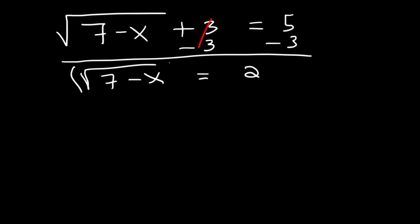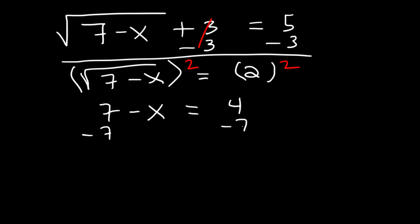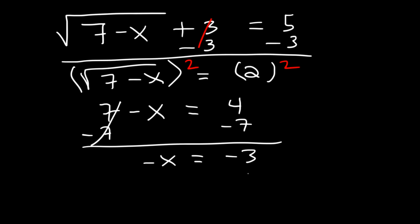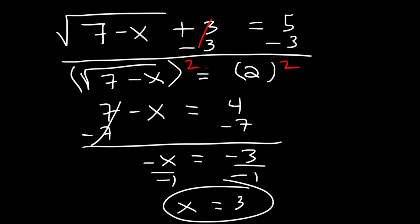Now at this point, you want to take the square of both sides. If you had done it before, you would have had to FOIL root 7 minus x plus 3, but now you don't have to. On the left it's just going to be 7 minus x, and 2 squared is 4. Now subtract both sides by 7, so negative x equals 4 minus 7, or negative 3. Divide both sides by negative 1 — negative 3 divided by negative 1 is positive 3. You can check: 7 minus 3 is 4, the square root of 4 is 2, and 2 plus 3 is 5. So that works.